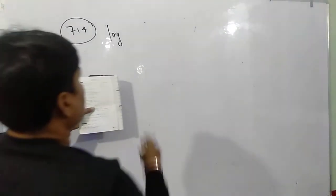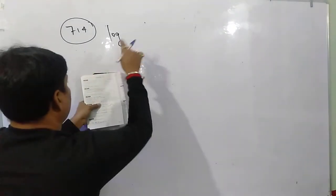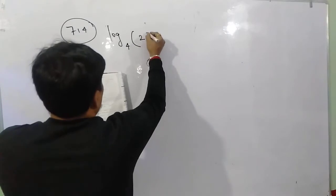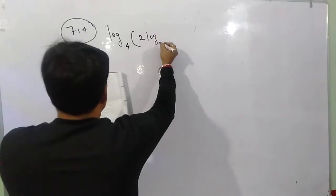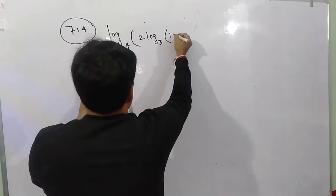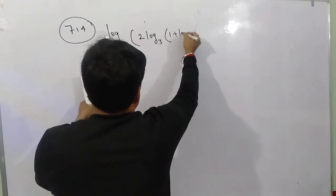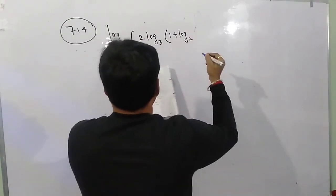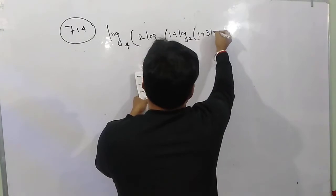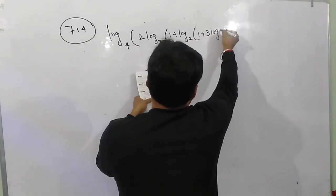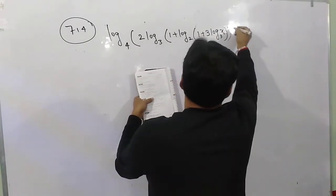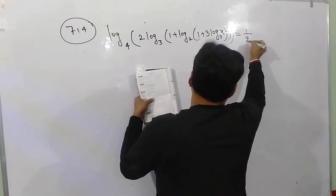Problem number 714: log base 4 of (2 · log base 3 of (1 + log base 2 of (1 + 3·log x base 3))) is equal to 1/2.